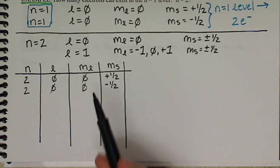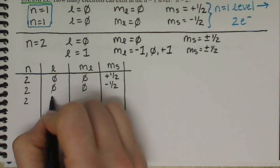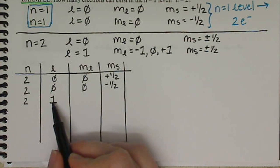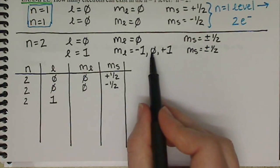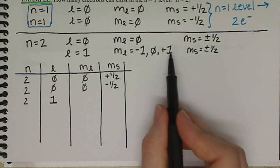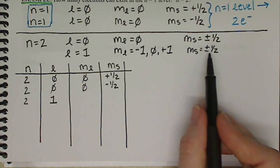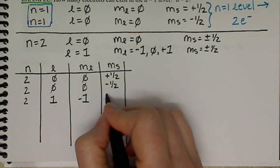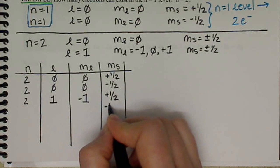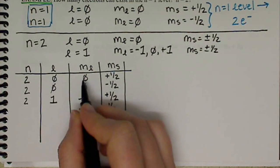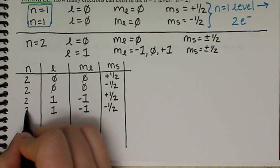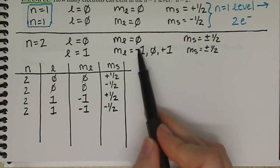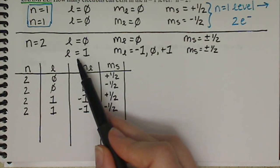Now we can exhaust our values with L equals 1. So we still have N equals 2. Now we're working with L of 1. When L is 1, M sub L has three options, and each of these three options will have two M sub S options. So when M sub L is negative 1, M sub S can be plus 1 half and minus 1 half, when M sub L is also negative 1, L equals 1, and N is still equal to 2. So that exhausts our M sub L equaling negative 1 and L equaling 1.